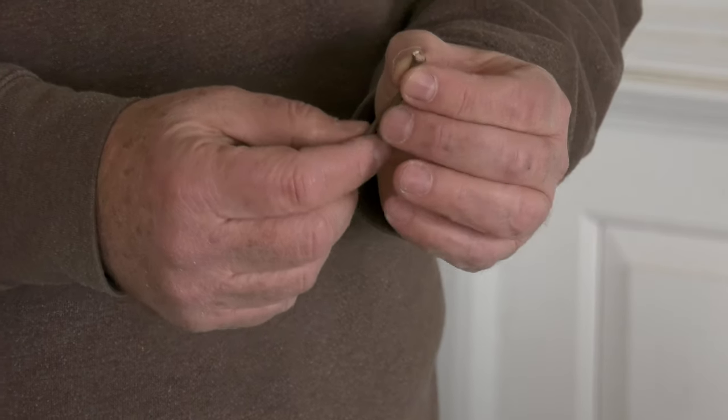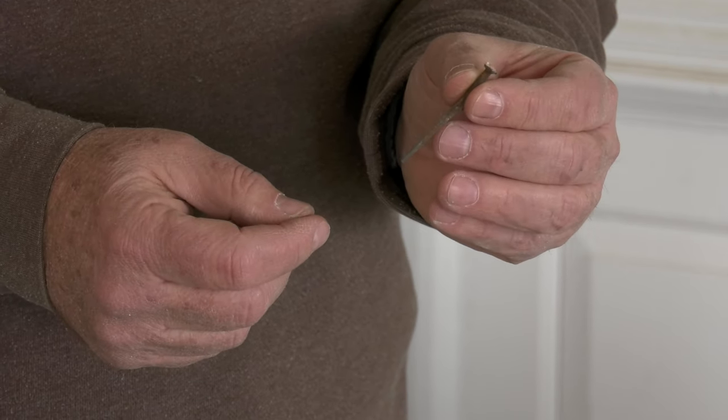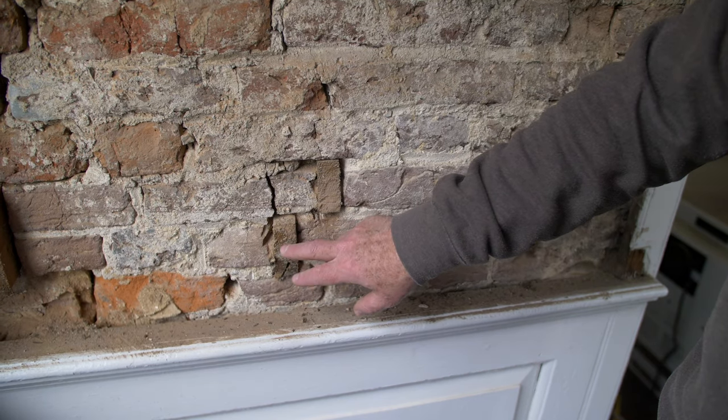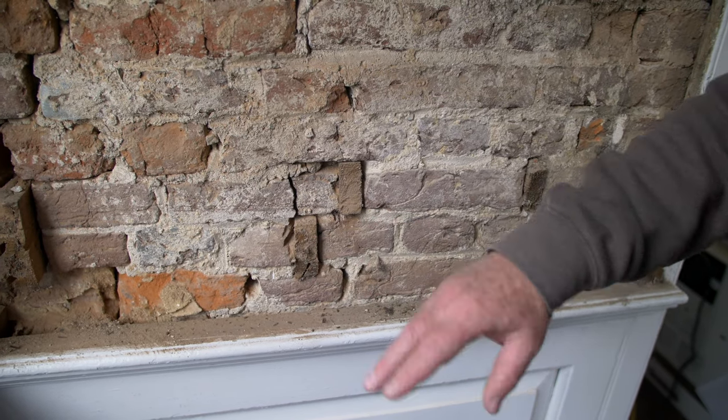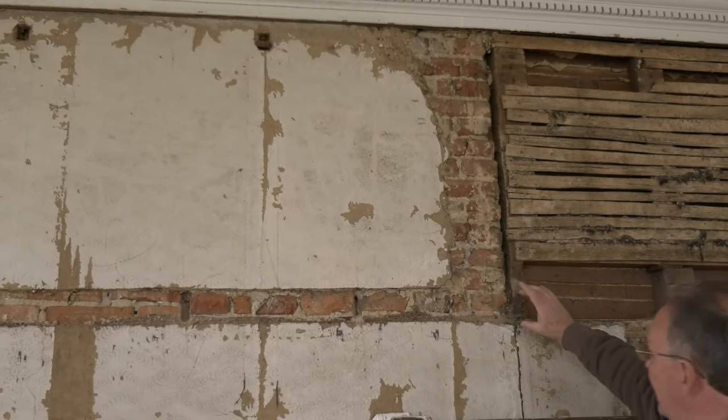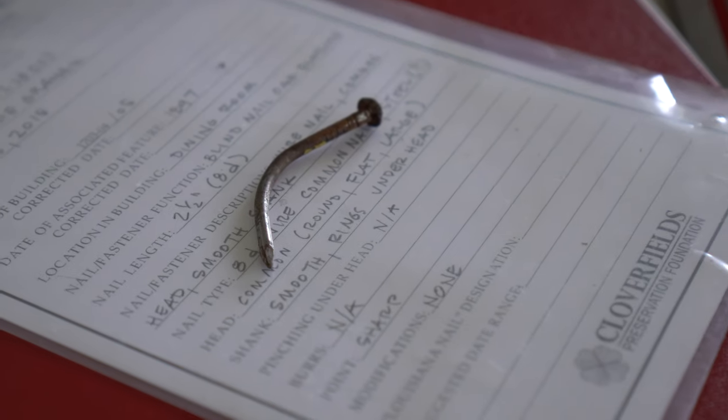These things have a fairly tight date range, probably 1830s and 1840s. In this case, this nail was used to install paneling in the parlor above the chair rail. It really helps us with the dating of that particular element.